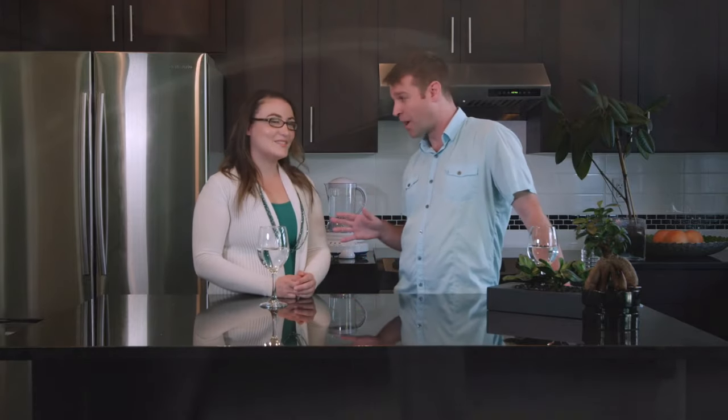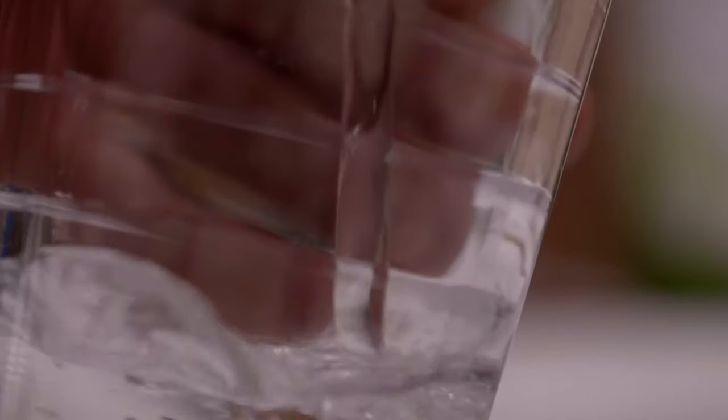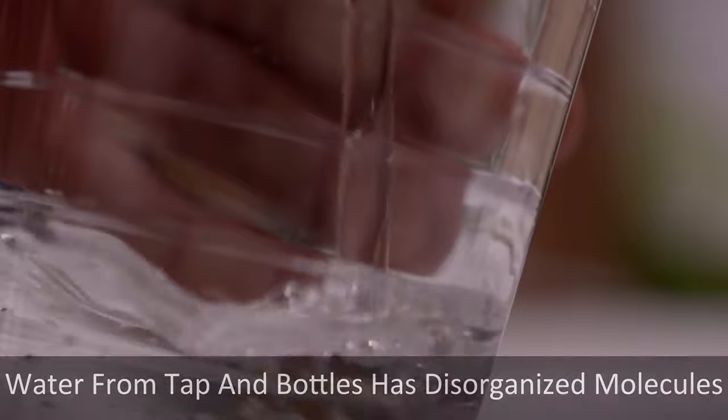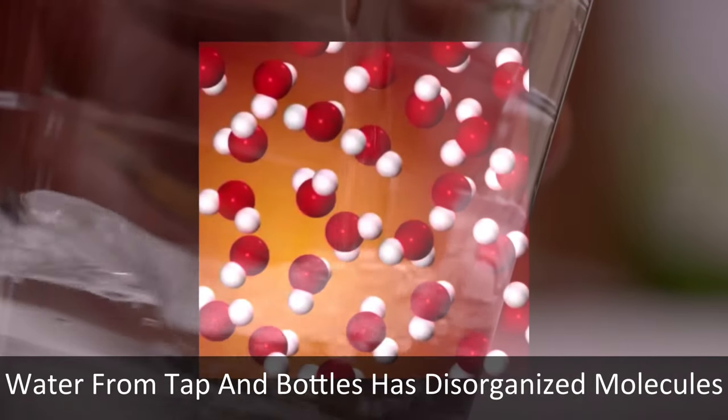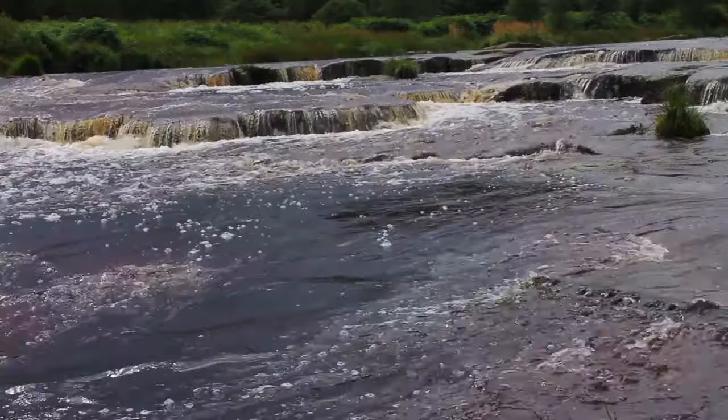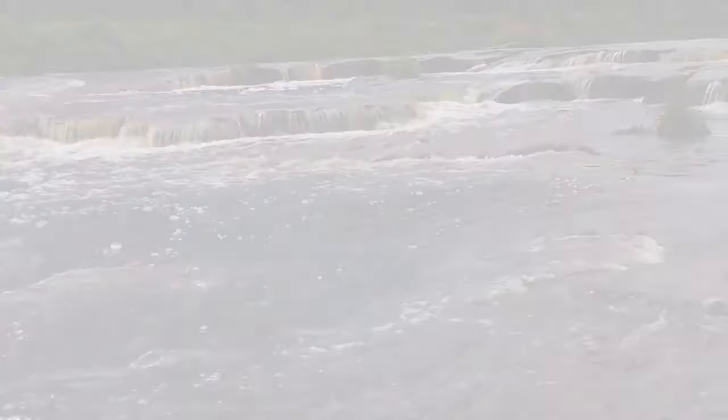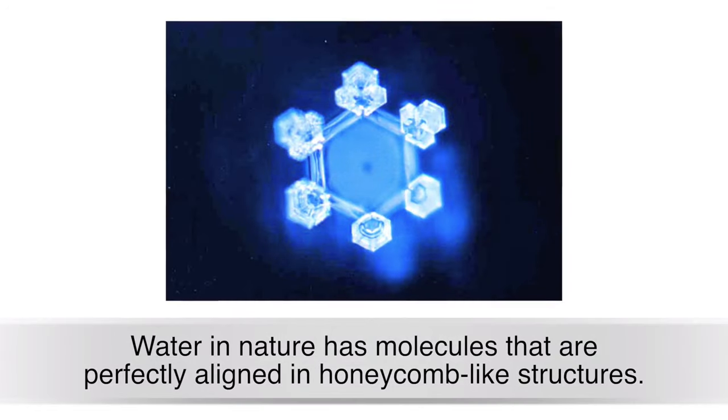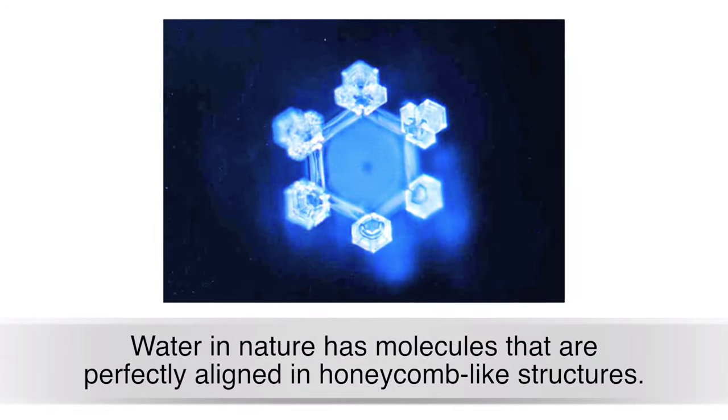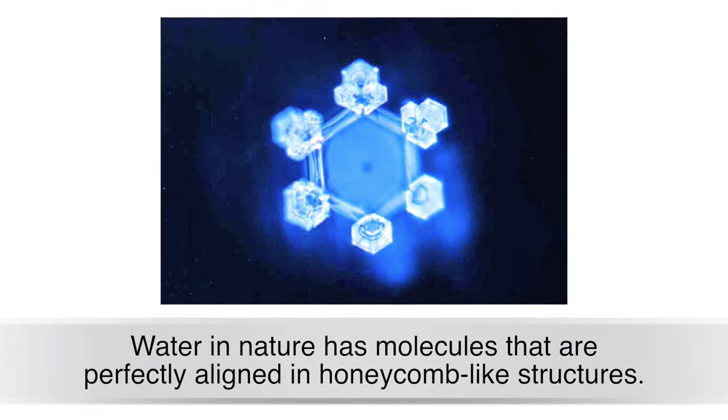When you take normal water that you get from either your tap or from bottles and you put it under a microscope, you'll see that the molecules are disorganized. They come together in long strings or clumps. But if you take pristine water from out in nature and look at it under a microscope, you'd see that the molecules create a completely different structure. The molecules would align to create a perfect honeycomb structure.